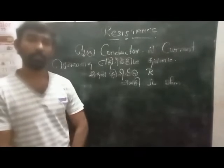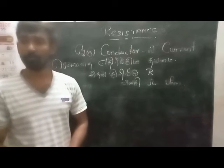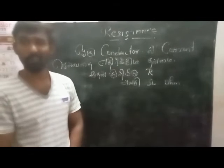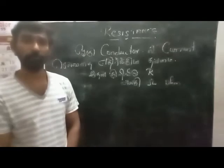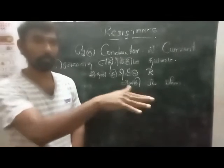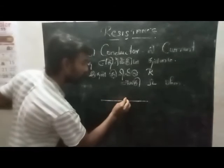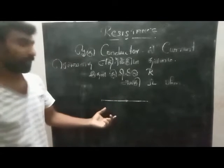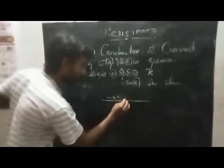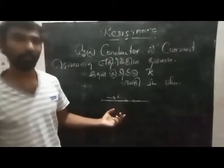Ohm's law relates voltage, current, and resistance. When you transmit current and voltage — for example with 4.8 current — there is resistance to that current. The current is supposed to exert force, but there is a resistance opposing it.